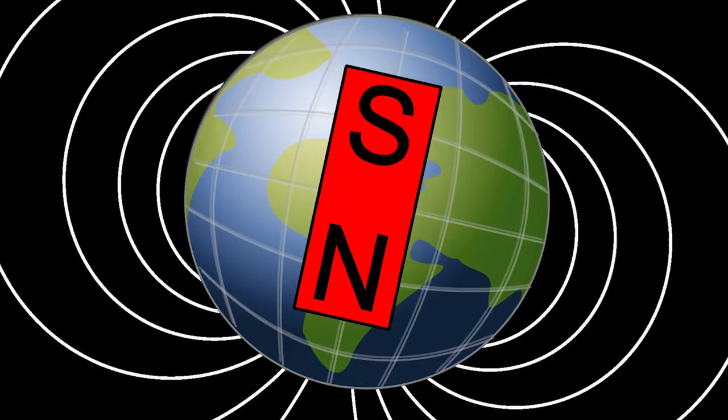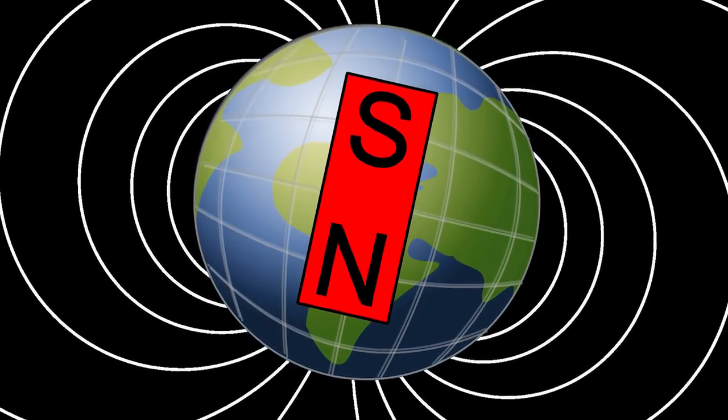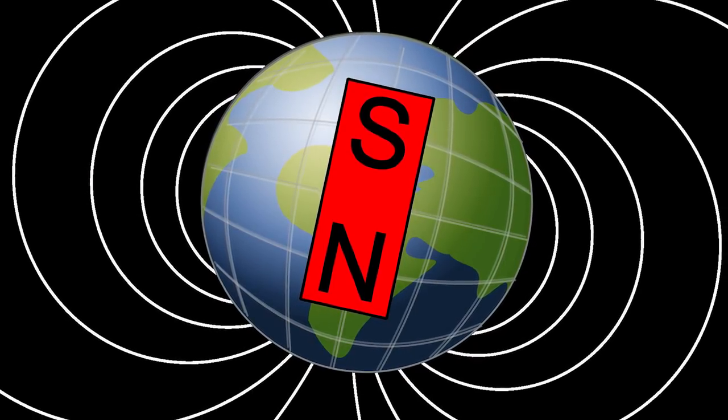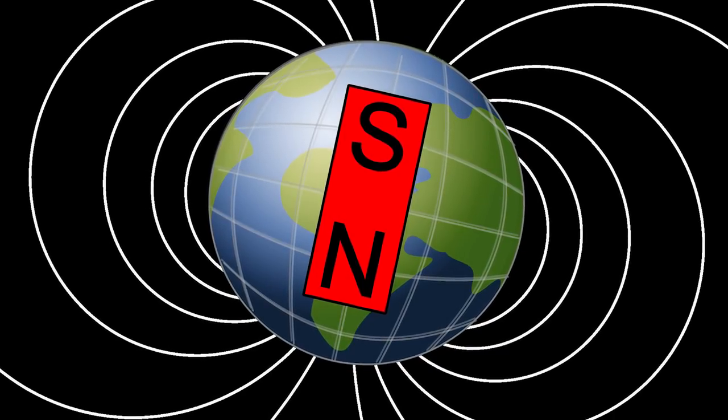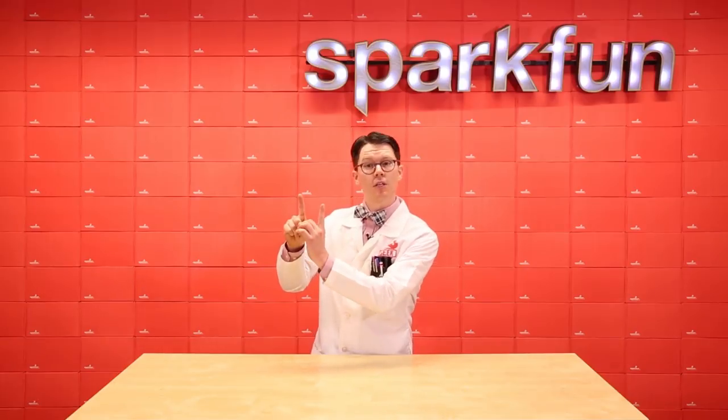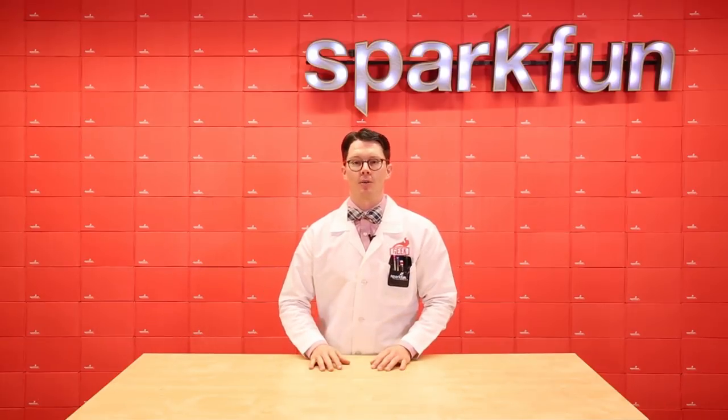Scientists believe that the Earth's magnetic field is created by electric currents in the core's conductive material. As it turns out, the geological north pole looks like the south pole of a magnet, and the geological south pole acts like a magnetic north pole. Earth's rotational axis and the magnetic poles don't actually line up, but they're close enough for general navigational purposes.